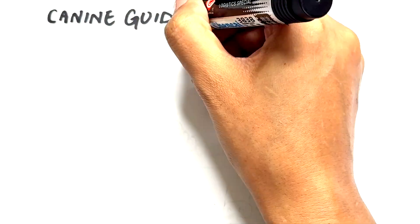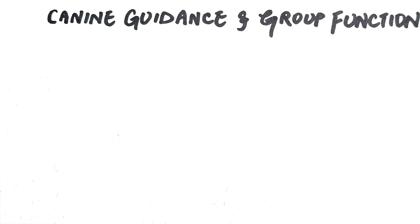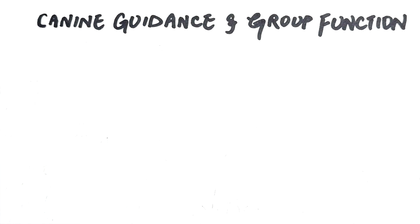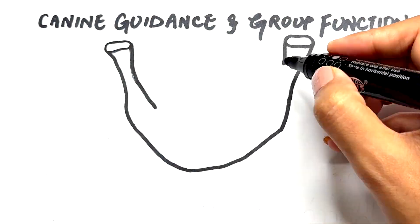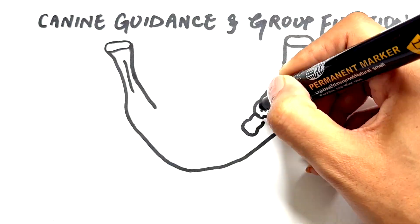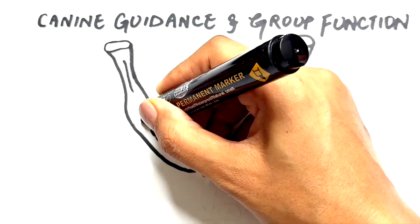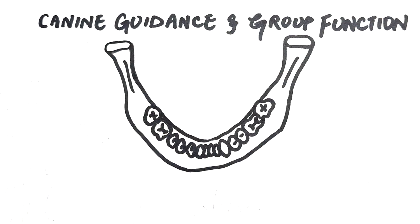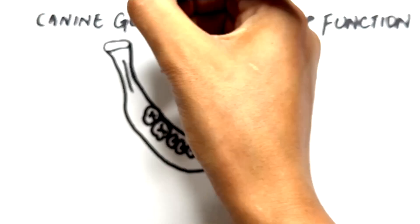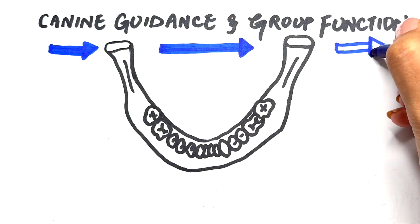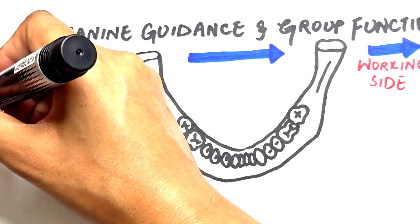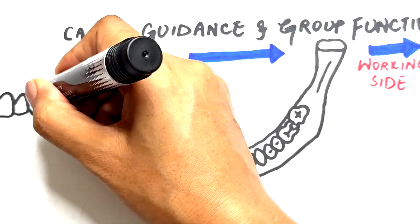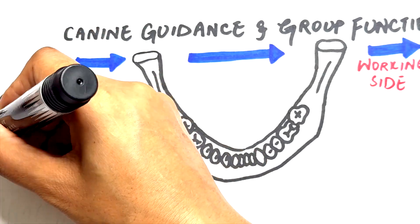Before we jump right into the topic, let's learn some basic terms. When your jaw moves laterally or side to side, the side it moves toward is called the working side — that's where the teeth touch and help guide the movement. The other side is the non-working side, where teeth usually stay apart.